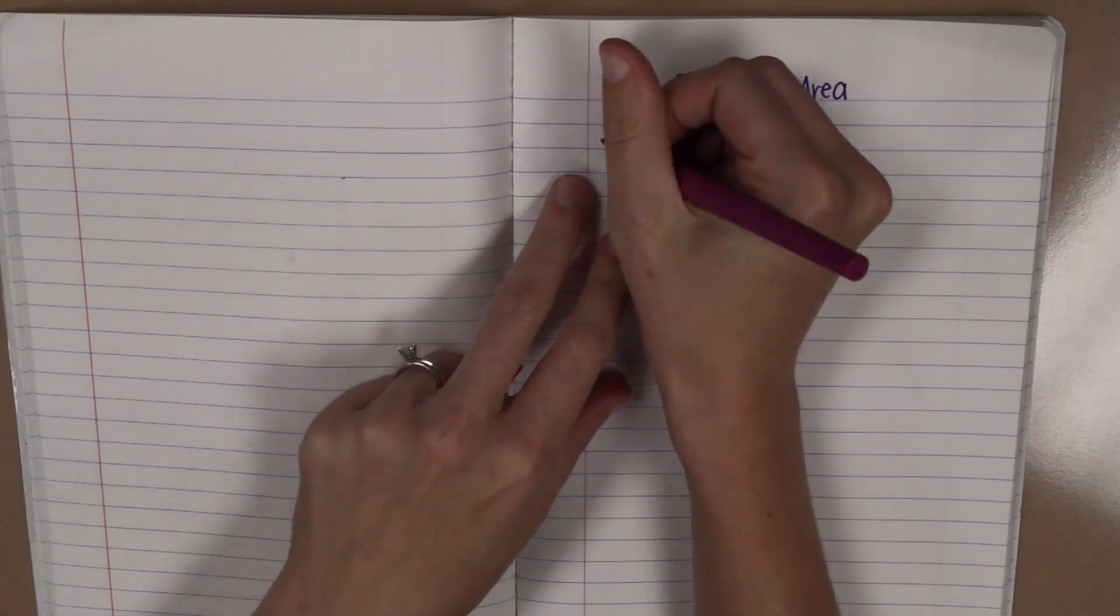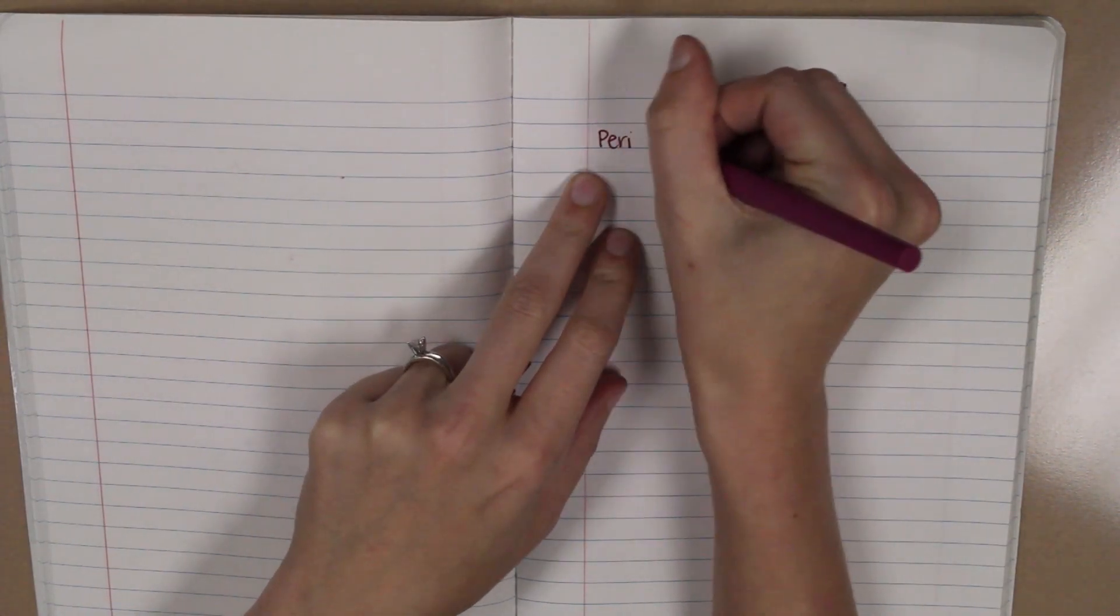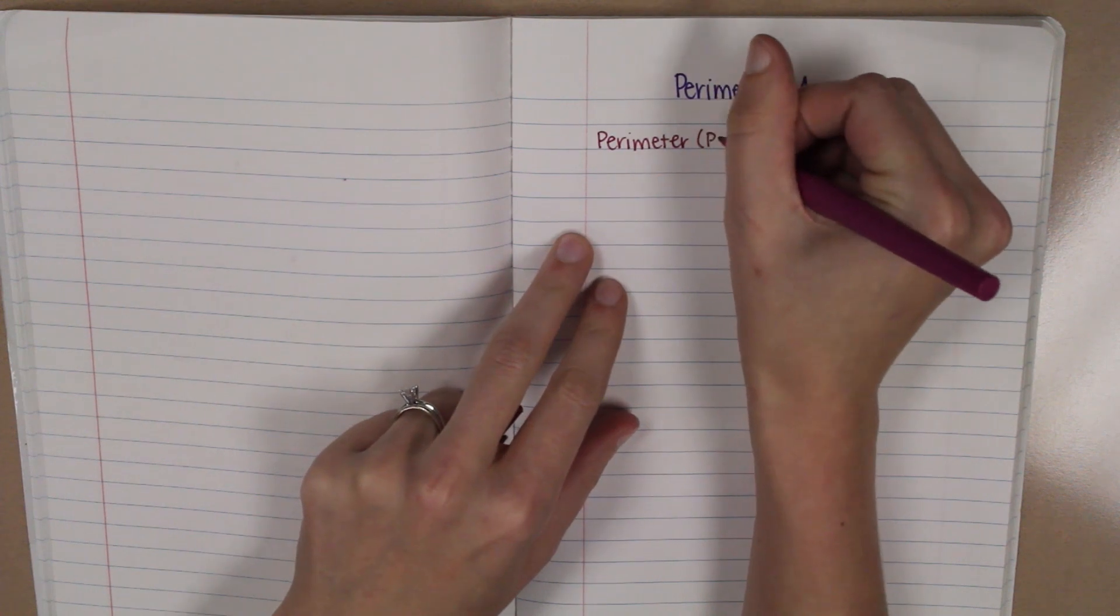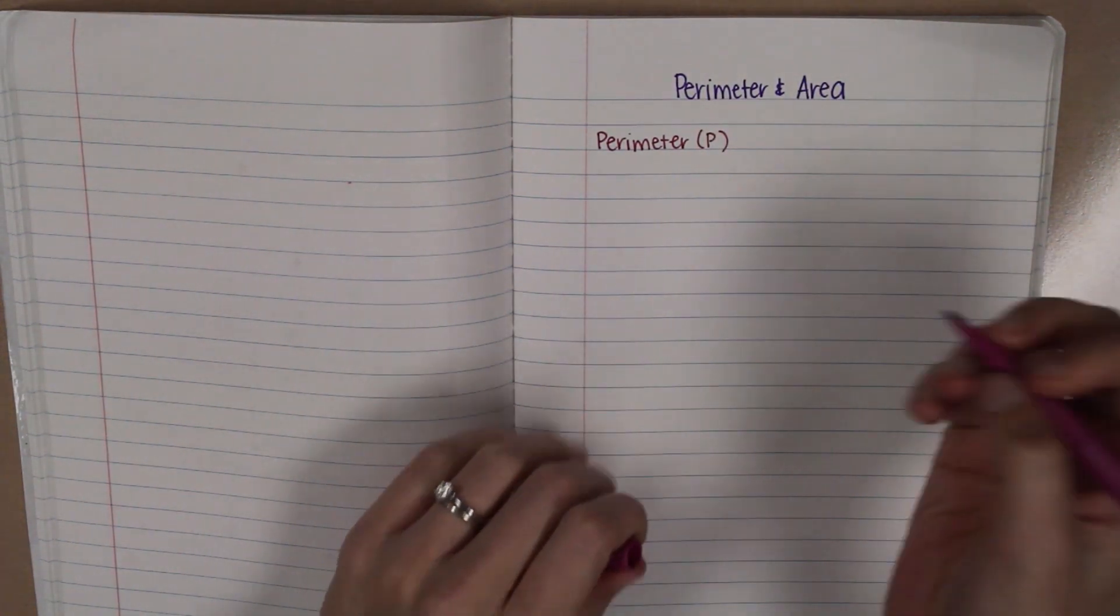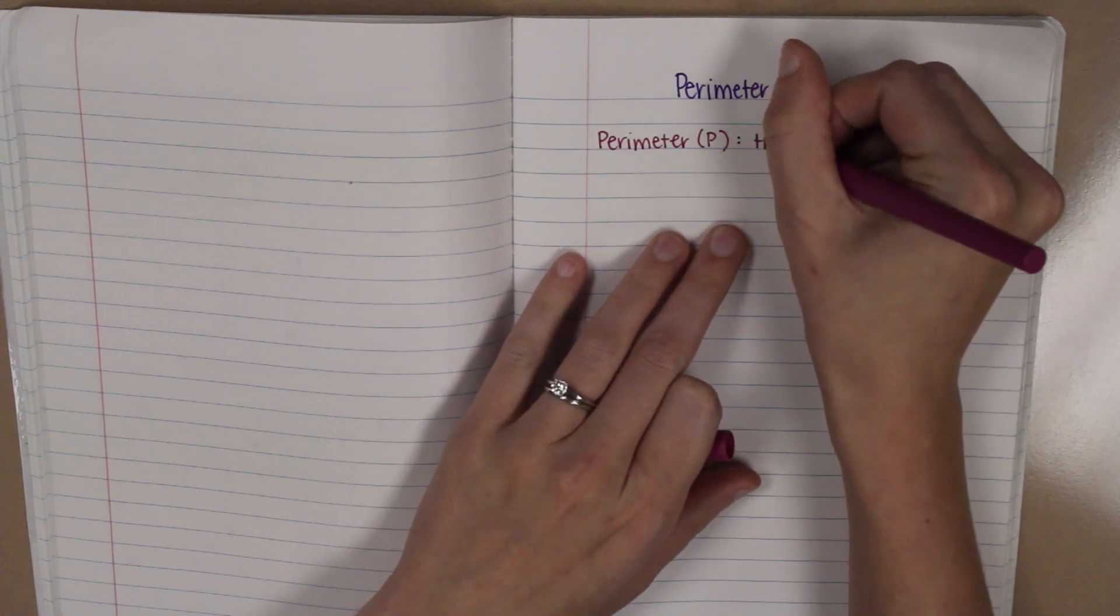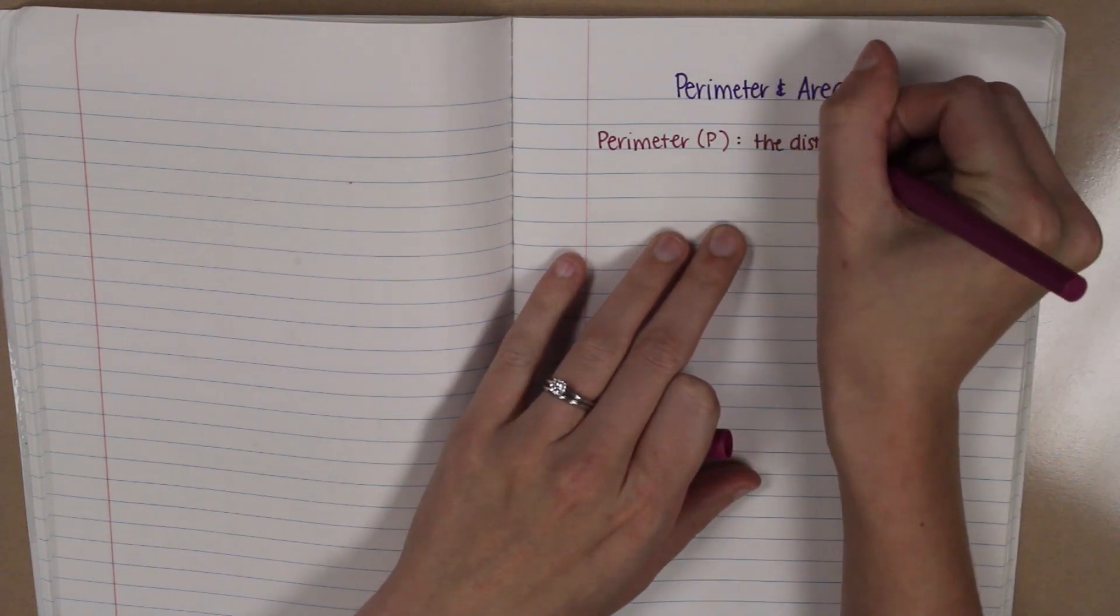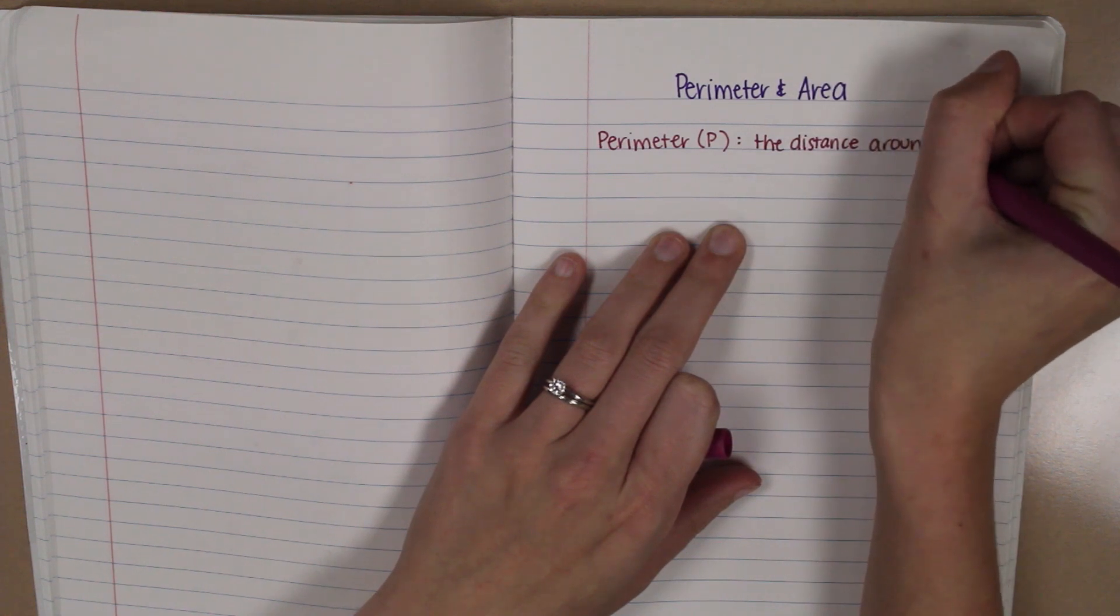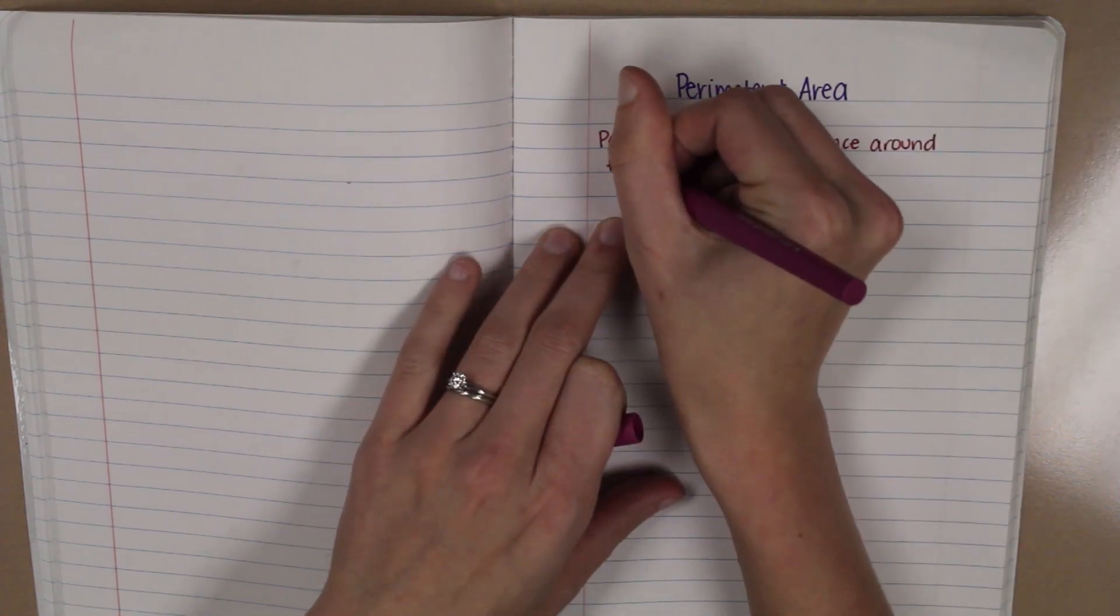Hey guys, it's Miss Hampton. We're going to be taking notes today on perimeter and area. This is something you should be very familiar with. We will start with perimeter. So write that at the top. Sometimes abbreviated with P. This is going to be the distance around the outside of a shape. So let's get that definition down. The distance around the outside of a shape.